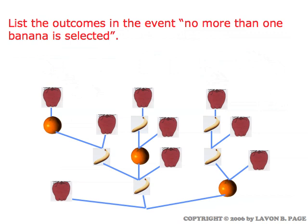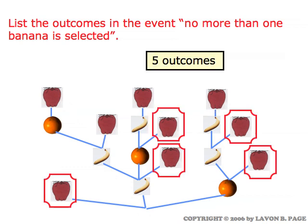Now let's focus on the event 'no more than one banana is selected' — all the cases where Andy gets to the apple before pulling out more than one banana. This eliminates the cases where he gets a banana on both his first and second draws. What remains are five outcomes, marked here. These are the cases where he reaches the apple without drawing more than one banana — for example, one outcome where he pulls one banana out, then the orange, then the apple. Five outcomes in this event.